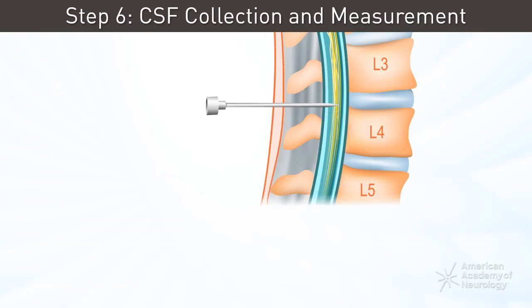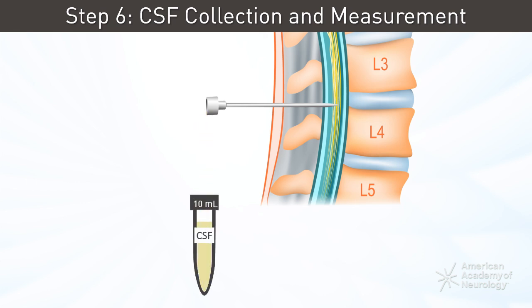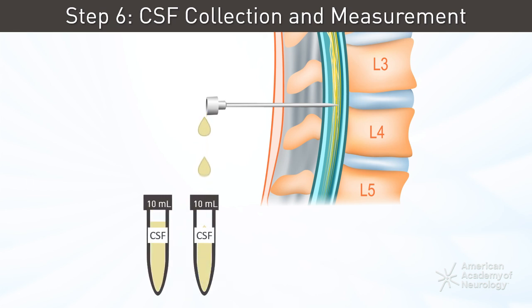Then comes CSF collection and measurement. Once CSF flow is established, the opening pressure is measured with the manometer. Then CSF is collected in sterile tubes for analysis. The amount of CSF removed varies, but it is typically between 10 to 20 milliliters.